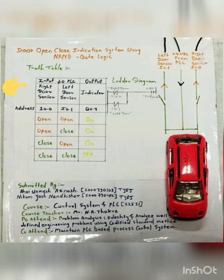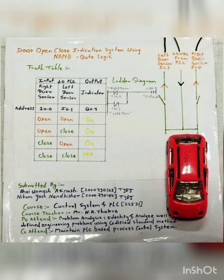Now here we will see the truth table of this micro project. Instead of a traditional truth table, here we have the right hand door sensor as one input, the left hand door sensor as a second input, and the indicator as output. I0.0 and I0.1 are the input pins of the PLC where we connect the right door sensor and left door sensor respectively.